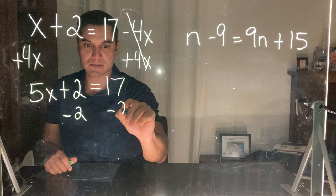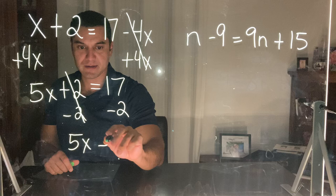From here I can just subtract 2 from both sides. The 2's will cancel. So I have now 5x equals 17 minus 2 will give me 15.